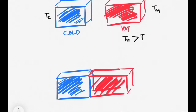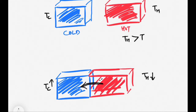If we bring these two objects in contact, we observe that the temperature of the cold body starts increasing and the temperature of the hot body starts decreasing. The high-temperature body's molecules, which are vibrating or moving with higher speed, strike the molecules and atoms of the colder body and transfer some energy to them. They keep on transferring that energy until both objects reach the same temperature.